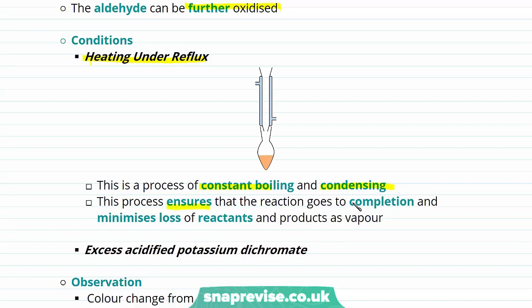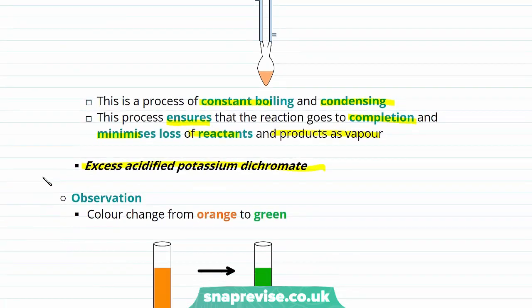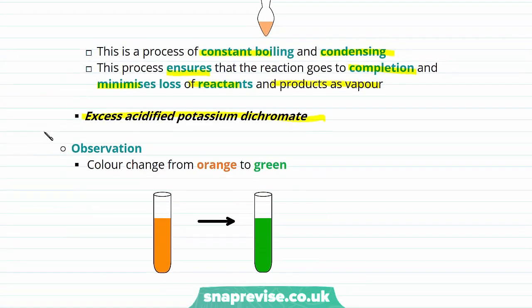Heating under reflux ensures that the reaction goes to completion and minimizes loss of reactants and product as vapor. Furthermore, we must also use an excess of our oxidizing agent — that's excess acidified potassium dichromate — to ensure there's enough oxidizing agent to allow our alcohol to become fully oxidized. And again, as oxidation is taking place, we observe that color change from orange to green as the reaction occurs.